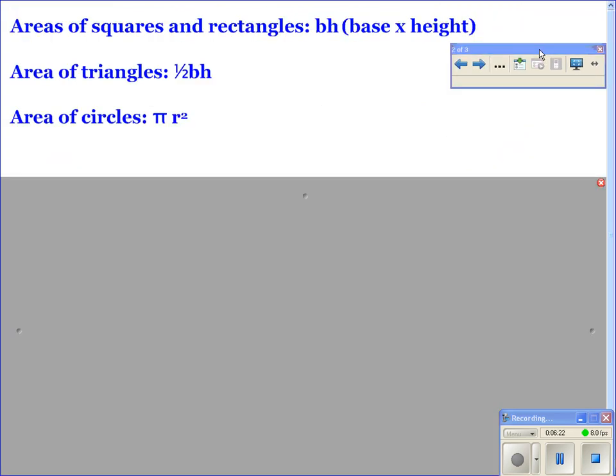All right. So I want you to write down these three formulas. These are the three we're going to focus on in this section. Area of squares and rectangles is BH, which stands for base times height. Area of triangles, very commonly forgotten when we do triangles. Students always forget the one-half. Triangles are one-half base times height. Area of circles, which Eric brought up earlier, pi R squared. All of these should look semi-familiar to you, at least having seen them earlier in life.